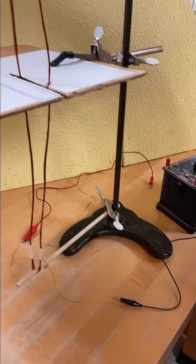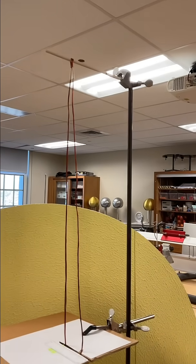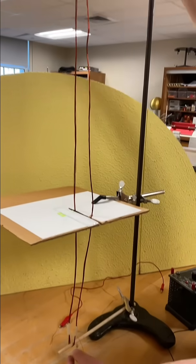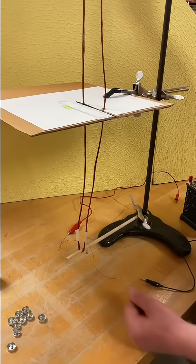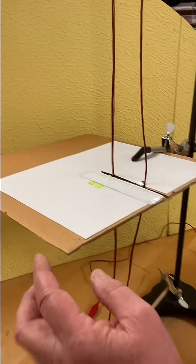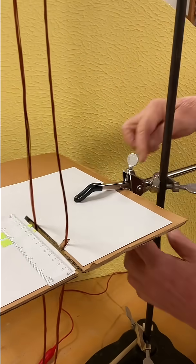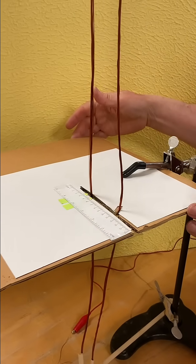At the ends of this, we have to support it, so we have dowel rods top and bottom to hold it stretched out on a ringstand. So that we can see what's happening, we just took a clamp and clamped it to hold this piece of cardboard.